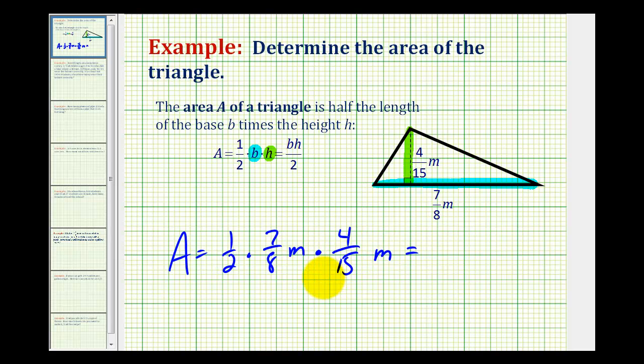Before we multiply, let's see if we can simplify anything. I know that 8 is the same as 4 times 2, so this 4 in the numerator and this 4 in the denominator simplify to 1. Nothing else is going to simplify.